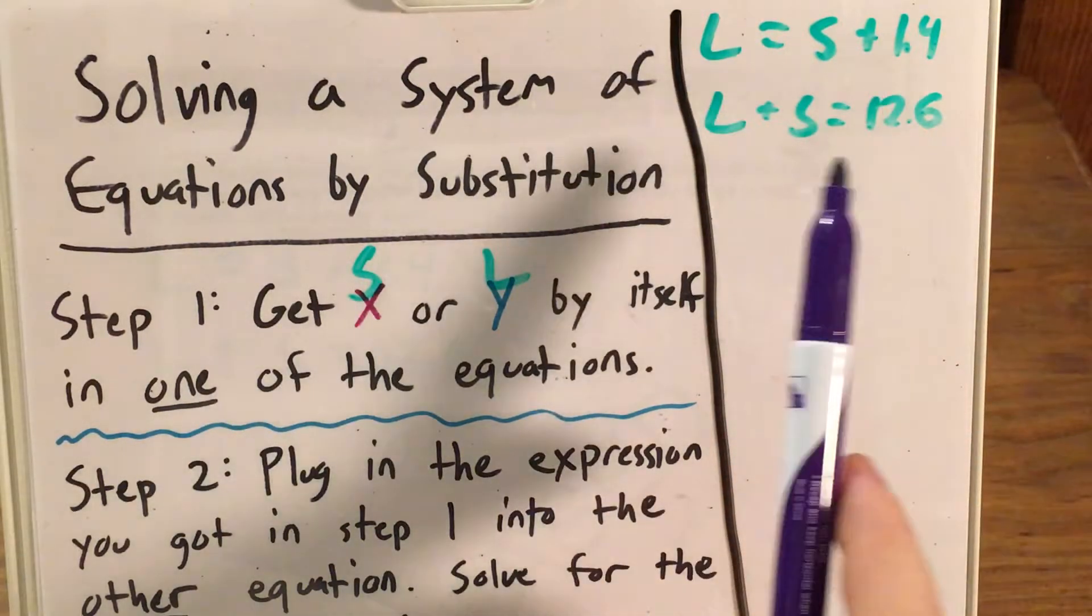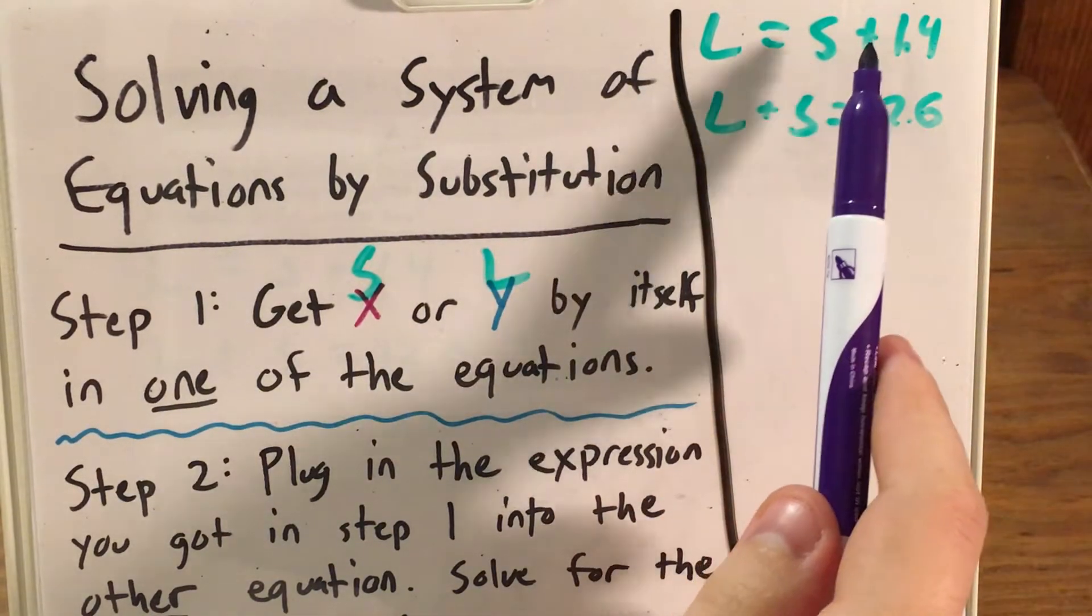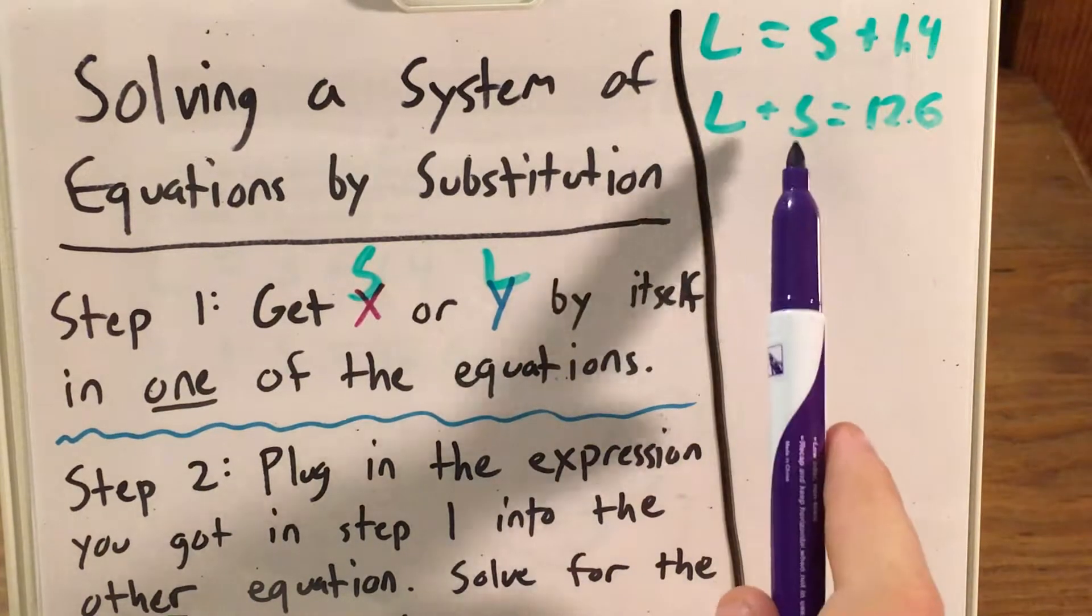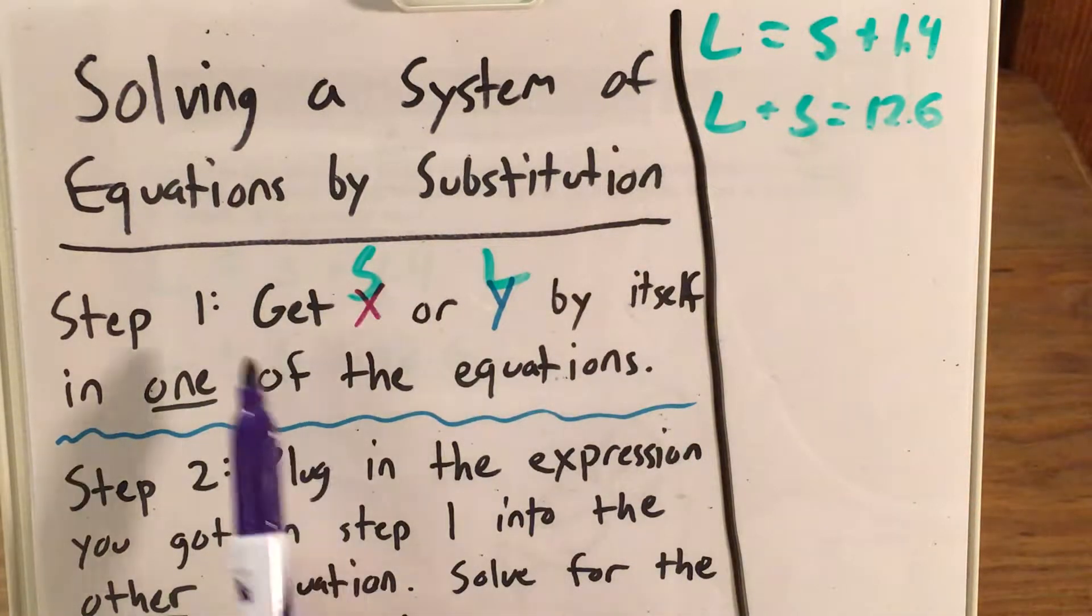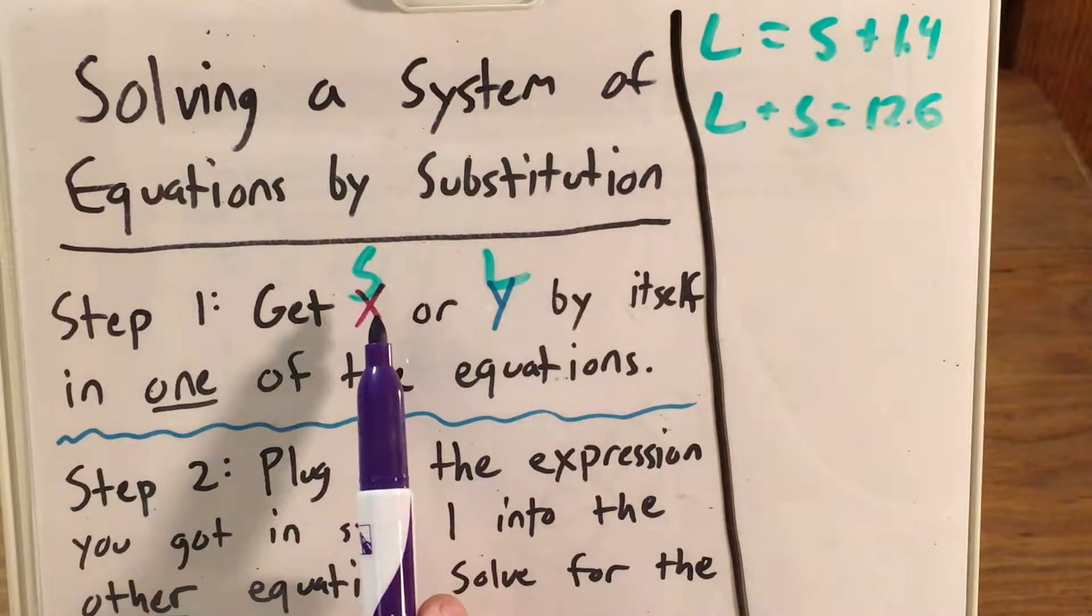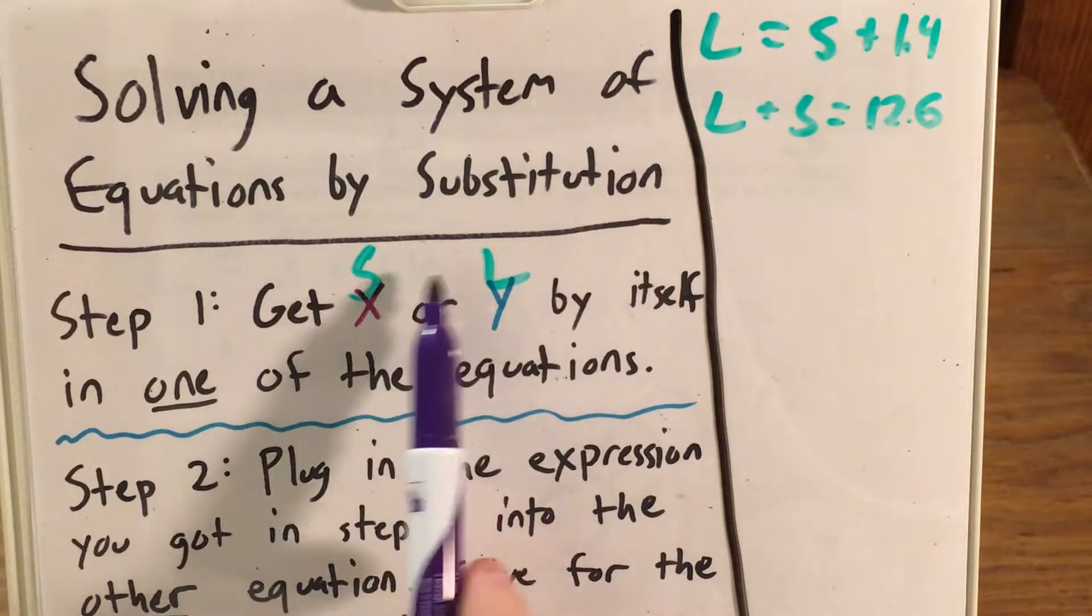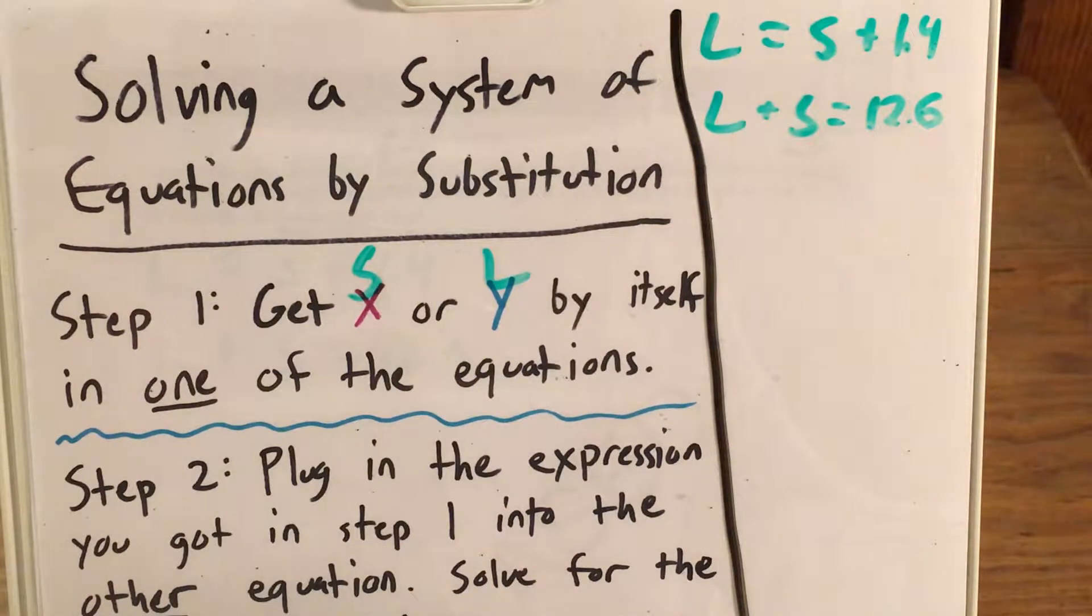I have my two equations here. The larger dog is the smaller dog's weight plus 1.4. The two of them together equal 12.6. So our first step is to get either X or Y, in this case S or L, the small dog's weight or the large dog's weight, by itself in one of the equations.